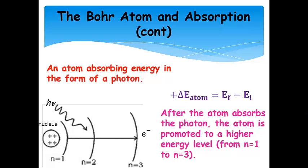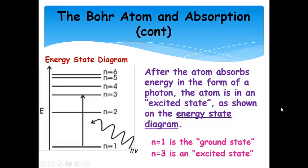Here are a few more pictures of what's going on. Here's our nucleus, and here's n equals 1 — these would be going all the way around, but I'm just showing part of the orbit — n equals 2, n equals 3. We can see a photon with a particular frequency, and the atom absorbs it, and the electron goes from n equals 1 to n equals 3. Here's the same transition shown on an energy state diagram: starting at n equals 1, this specific frequency photon comes in, it's absorbed, and the atom is promoted to n equals 3 — now it's in an excited state.